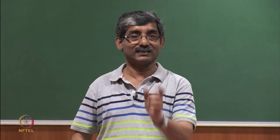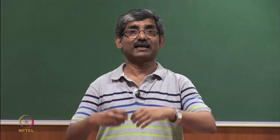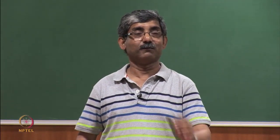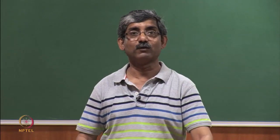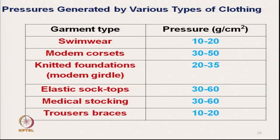If a fabric is rigid and not extensible, the pressure will be very high when body movement starts. Typical ranges of pressure developed by different types of garments are: swimwear 10 to 20 grams per square centimeter, modern corset 30 to 50, and knitted foundation garment 20 to 25. If pressure increases beyond 60, we will feel discomfort due to pressure.